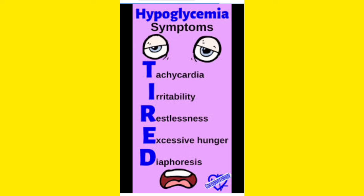I means irritability and R means restlessness. So T-I-R: tachycardia, irritability, and restlessness. The patient is very irritable and very restless. Then E and D — both represent excess: E means excessive hunger and D means diaphoresis.